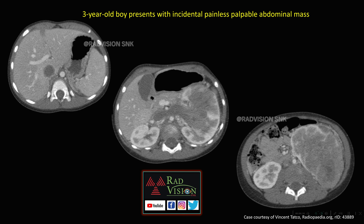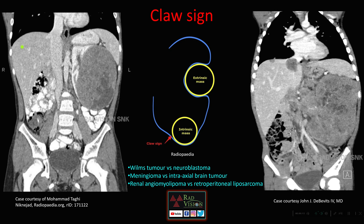This is a classical case of nephroblastoma. You can see the claw sign in coronal sections — a mass arising from the kidney with sharp angles between the mass and the kidney. Whenever there is a mass originating from an organ with sharp angles adjacent to it, the mass is probably arising from that organ. If there are no sharp angles, it is an extrinsic mass abutting or displacing the organ. Claw sign helps in differentiating nephroblastoma from neuroblastoma, meningioma versus intraxial brain tumor, and renal angiomyolipoma versus retroperitoneal liposarcoma.